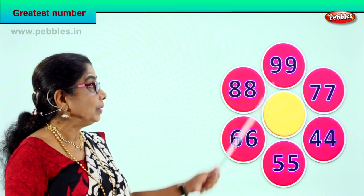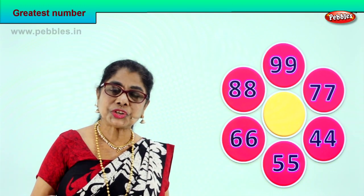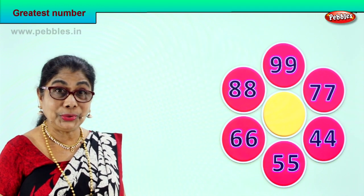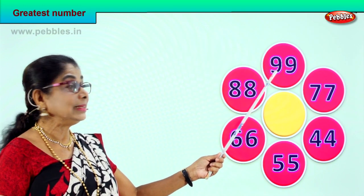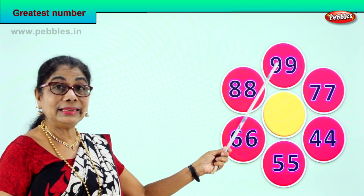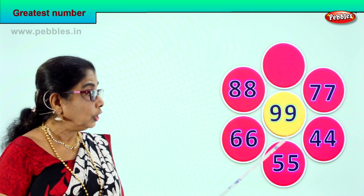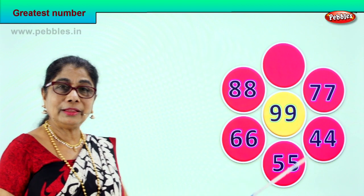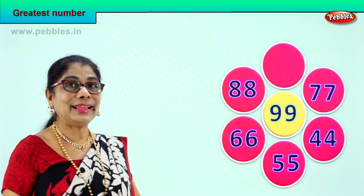Now we have 7 tens, 4 tens, 5 tens, 6 tens, 8 tens, 9 tens. Which number has the highest number of tens? 9 tens — this is the biggest number. So we pick and put it in the middle. The biggest number from all these numbers is 99, because it has 9 tens and 9 ones.